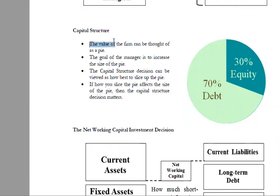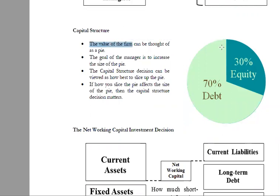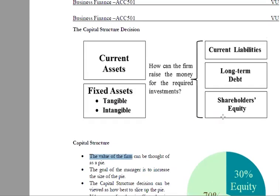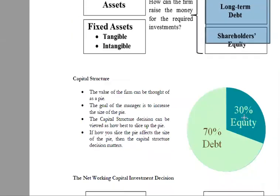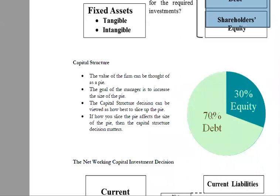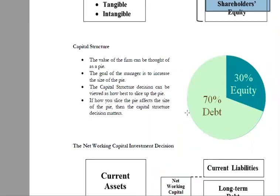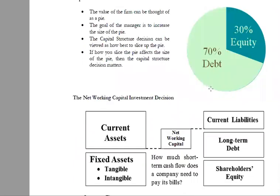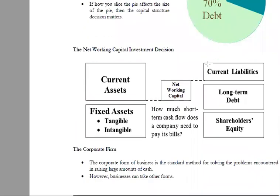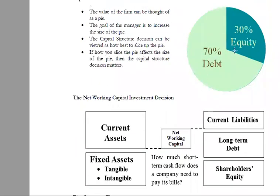The value of the firm can be thought of as a pie — we have to find the firm's value. We are essentially dividing up that pie. We need to decide how much to take as debt and how much as equity, and we will learn the techniques to make that decision.